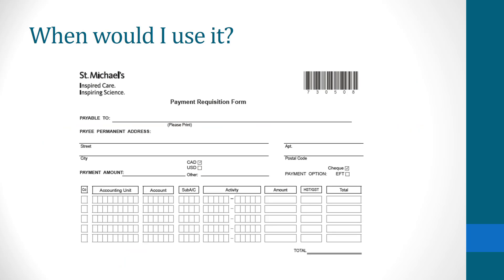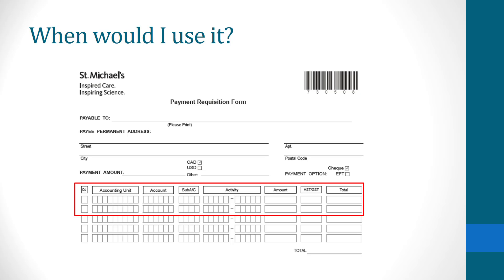The following is a snippet from a payment requisition form to an external vendor. You would insert the corresponding code into the corresponding boxes. If you are unsure about the activity or account code, it is preferred that you speak to your manager or principal investigator, as they work closer to the project. If you are unable to determine the coding, you may contact your research financial analyst or research finance.